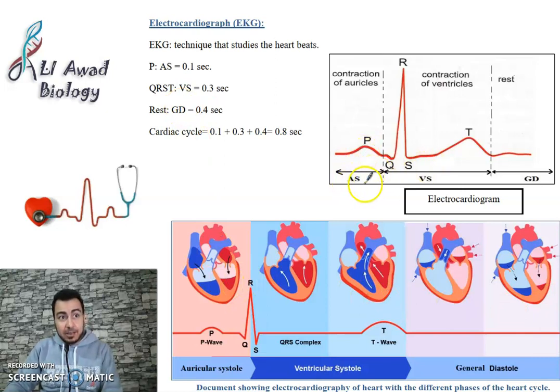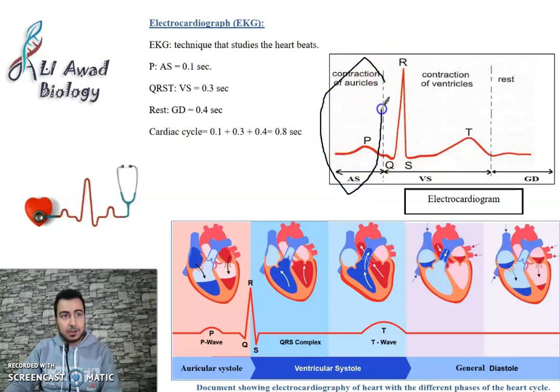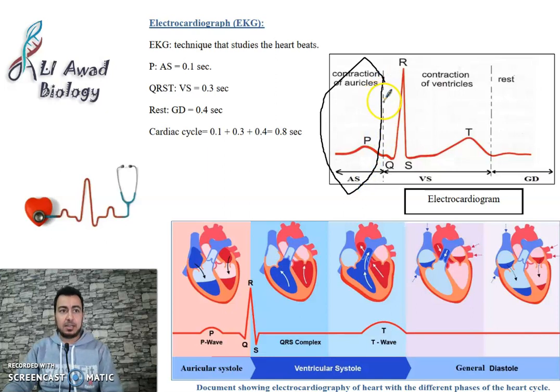So P — from here to here — is the auricular systole (AS). This represents the contraction of the auricles. This is the auricular systole — contraction of the two auricles.